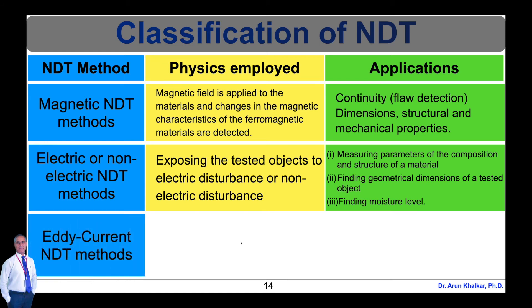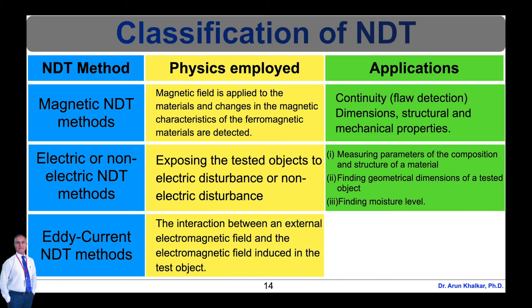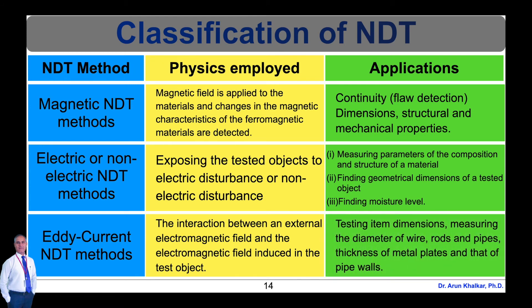Next is the eddy current entity method, in which the interaction between an external electromagnetic field and the electromagnetic field induced in the test objects is observed. With eddy current entity methods, testing item dimensions, measuring the diameter of wire, rods and pipes, and thickness of metal plates and pipe walls can be done. This is the classification of NDT methods based on the physics employed and their applications.